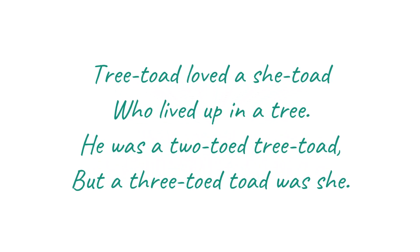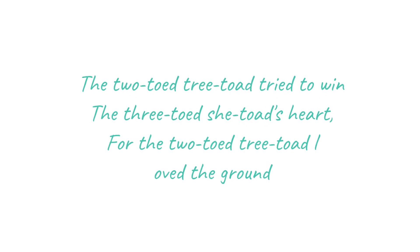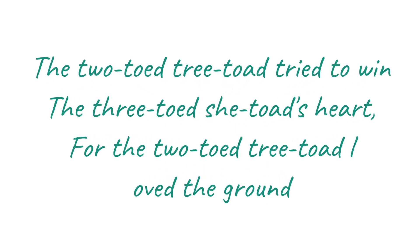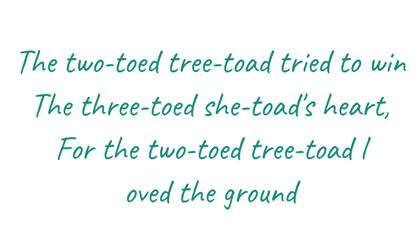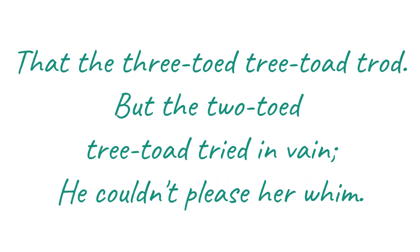A tree toad loved a she-toad who lived up in a tree. He was a two-toed tree toad, but a three-toed toad was she. The two-toed tree toad tried to win the three-toed she toad's heart. For the two-toed tree toad loved the ground that the three-toed tree toad trod. But the two-toed tree toad tried in vain — he couldn't please her whim.